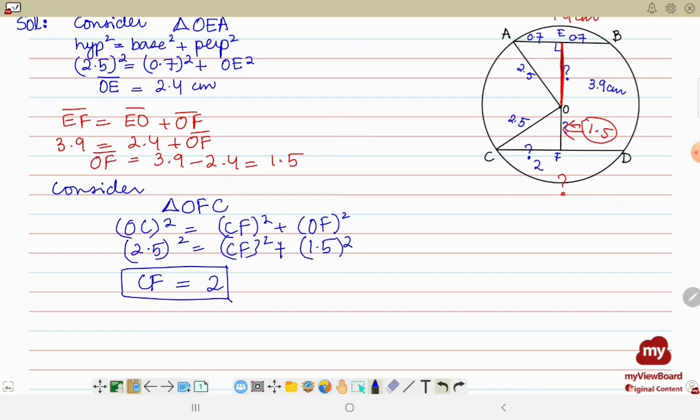Now if CF is equal to 2, so the length of CD, which is the length of the chord, is equal to 2 plus 2, that is equal to 4 centimeter, is the answer. Because CF is equal to FD, both sides are equal, that is why 2 plus 2 is equal to 4 will be the answer.